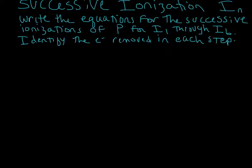Let's talk about successive ionization energies. Remember that when we take away the first electron, we call that the first ionization energy, I1. What we're going to do now is remove more electrons one at a time, and each time that's going to require a certain amount of energy. In this problem we are going to write the equations for the successive ionizations of phosphorus for I1 through I6 — so we're going to ionize it six times.